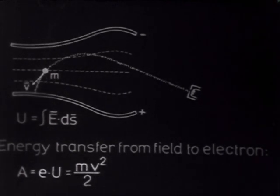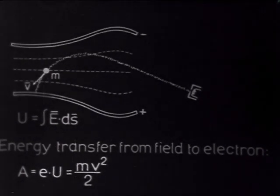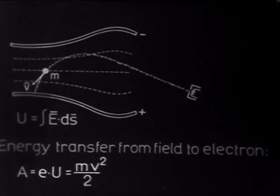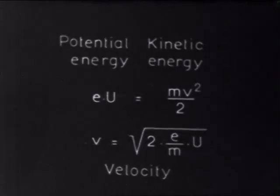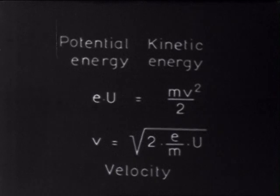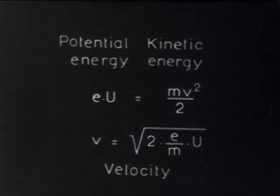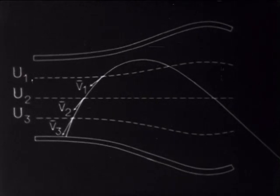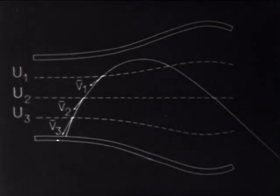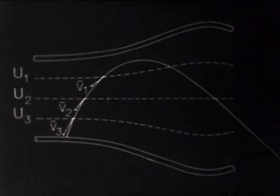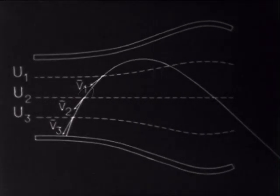Energy absorbed by the electron is in the form of kinetic energy. The velocity of the electron, which is proportional to the square root of the potential fall, is different in value and direction at each equal potential.